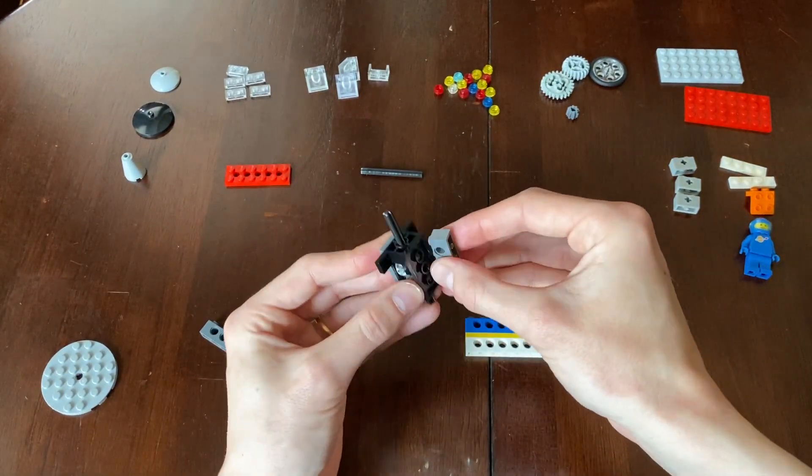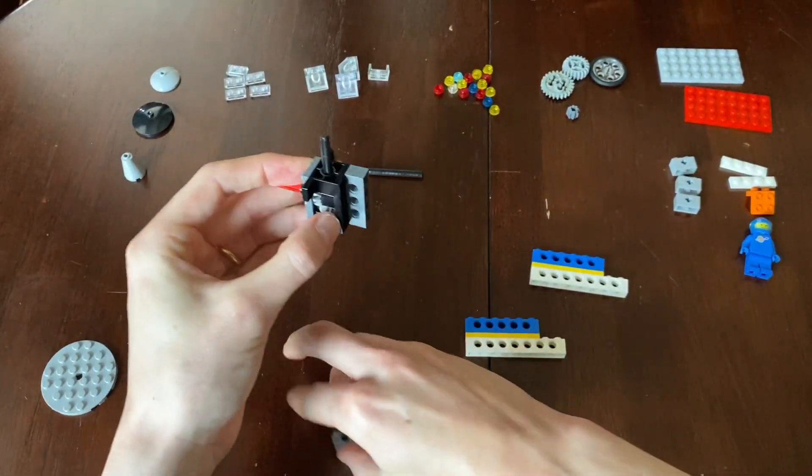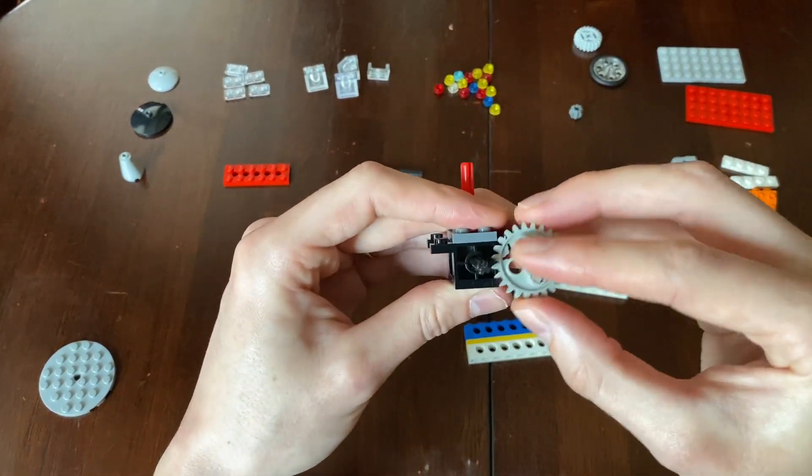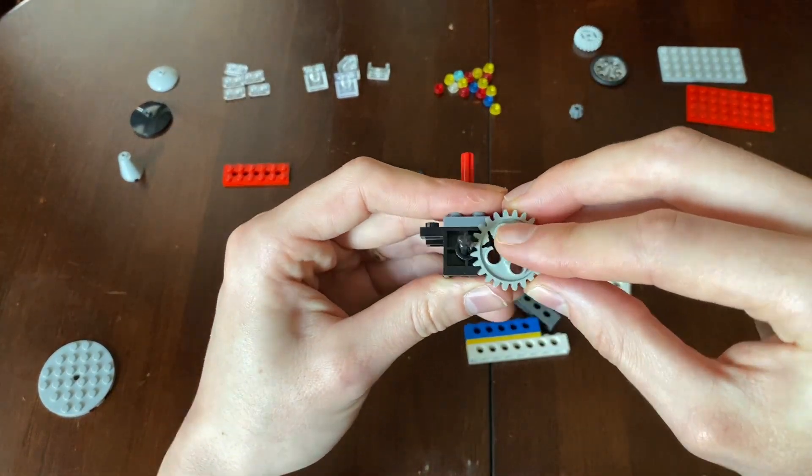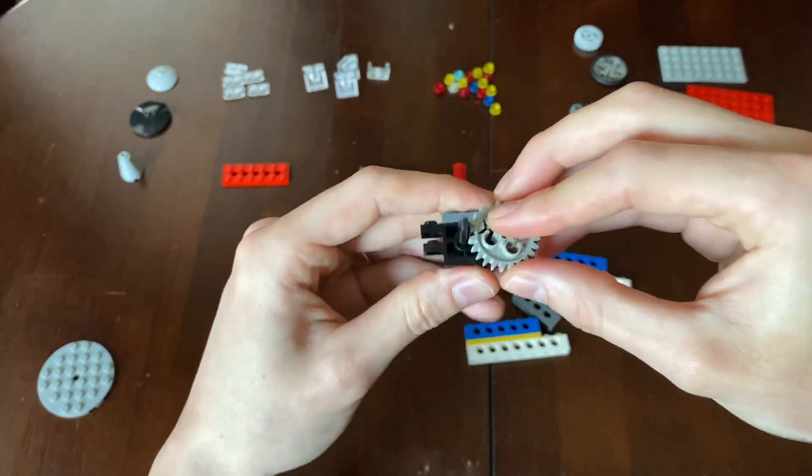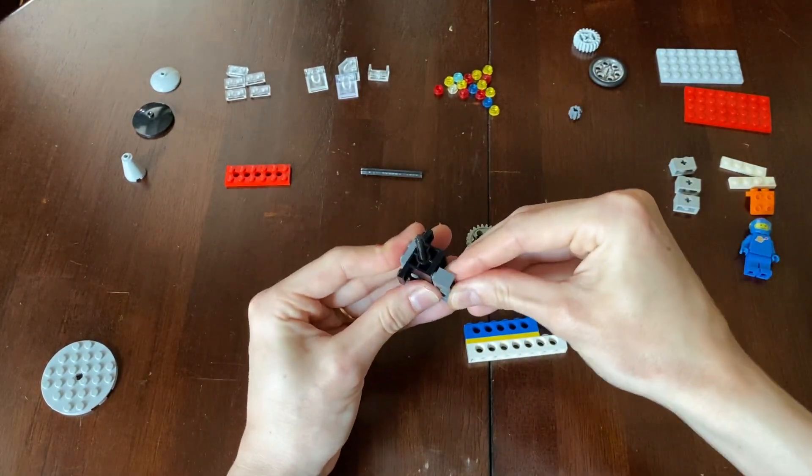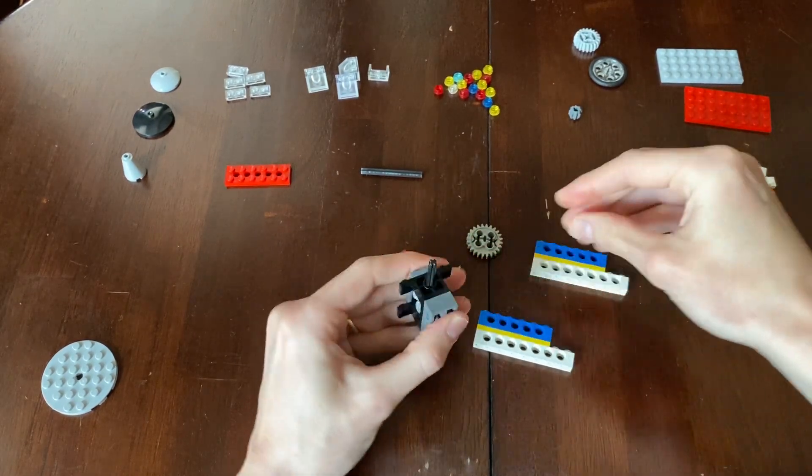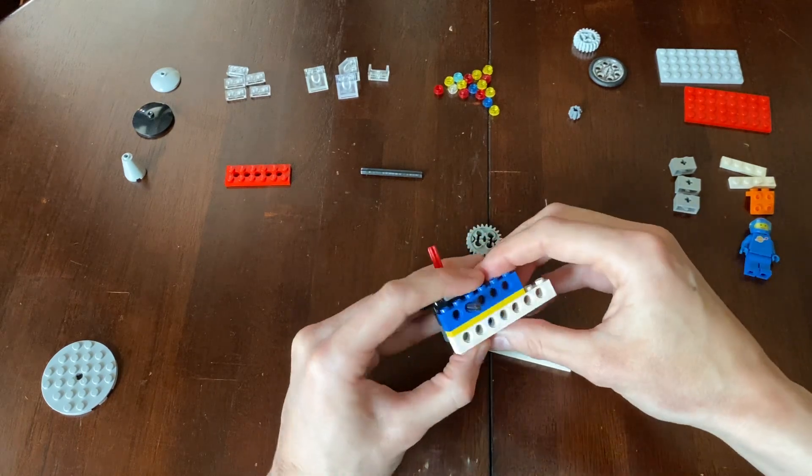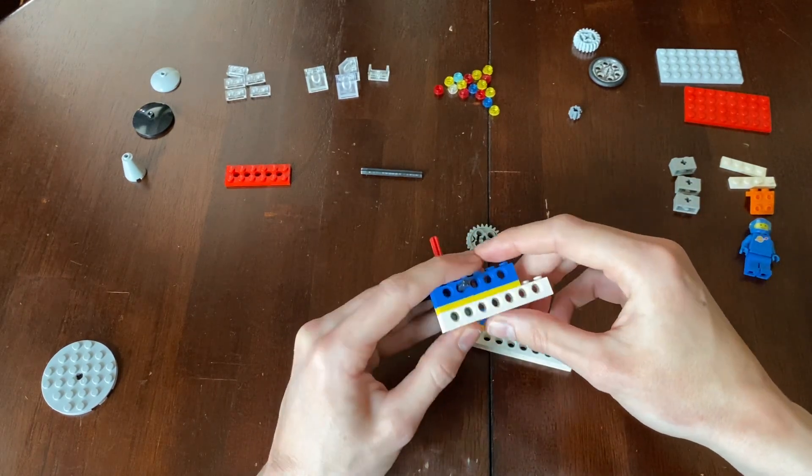And now we're going to want to bring our whole mechanism up. The reason we're going to do that is because if I put this gear on this mechanism, the gear is hanging off the bottom. It's not going to work. It's going to hit the ground. So we're going to want to bring the whole mechanism up and we're going to want to put this just like this. Perfect.